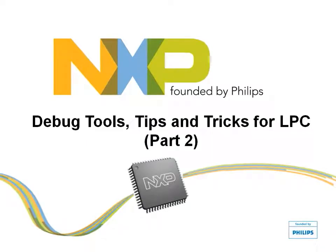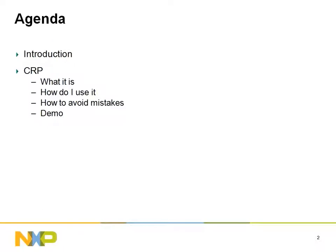Welcome to the second module of the Debug Tools, Tips, and Tricks for LPC-1100 and LPC-1300 families of ARM Cortex-M microcontrollers. This module will cover code read protection. The previous module covered ISP and valid user code. This module is mostly independent of the first, but you may want to watch or review Module 1 before proceeding.